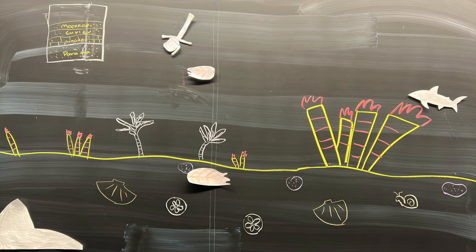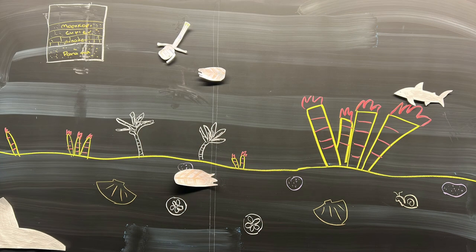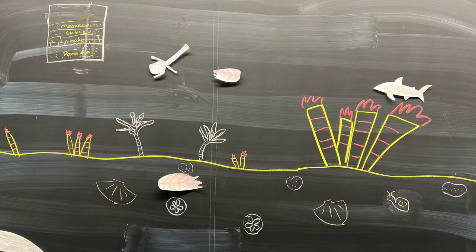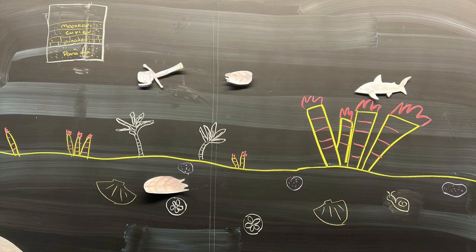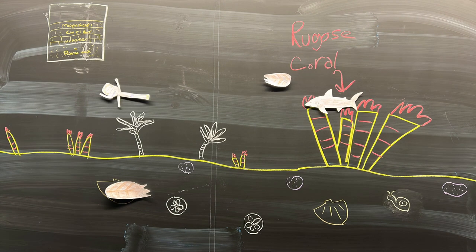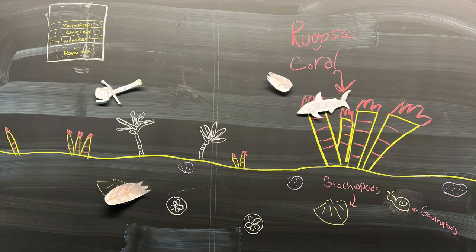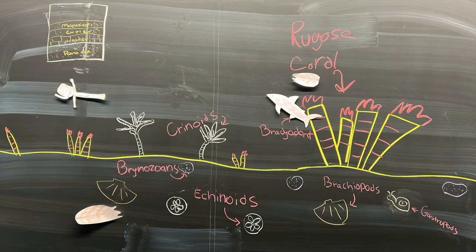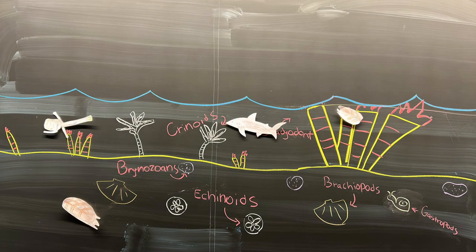Moving forward in time, we get to the Honecker Trail Formation, made from many sedimentary rocks and now open in shallow sea. Fossils found here are all marine life. These include rugose coral, brachiopods, gastropods, bradyodont, carinoids, echinoids, and brazones.